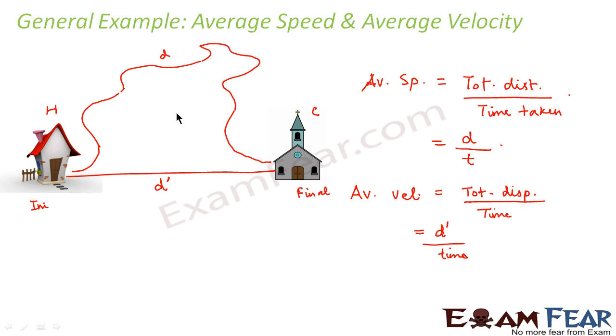So basically what I try to emphasize is that irrespective of whatever path is followed to reach the final position from the initial position, while calculating average velocity we will take into consideration the total displacement, that is the shortest distance between the initial and the final position. And by calculating average speed, we will take into consideration the total distance, that means the total length of the actual path followed.